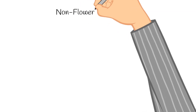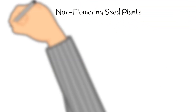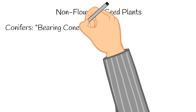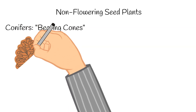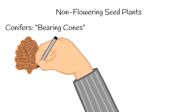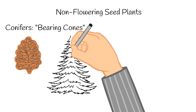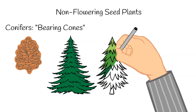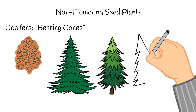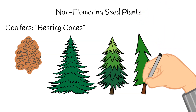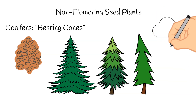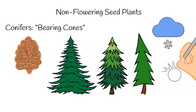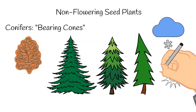Now we're going to talk about non-flowering types of seed plants, and this would be conifers. The word conifers means bearing cones, so all of these types of plants have cones that they keep their seeds in. Conifers are all mostly woody plants. Some examples are pine trees, cypress trees, cedars, and redwoods. Conifers can grow all over the world and are typically found in cooler regions, though interestingly, some can grow in warm regions. They are typically found in the northern parts of Europe, Asia, and North America.